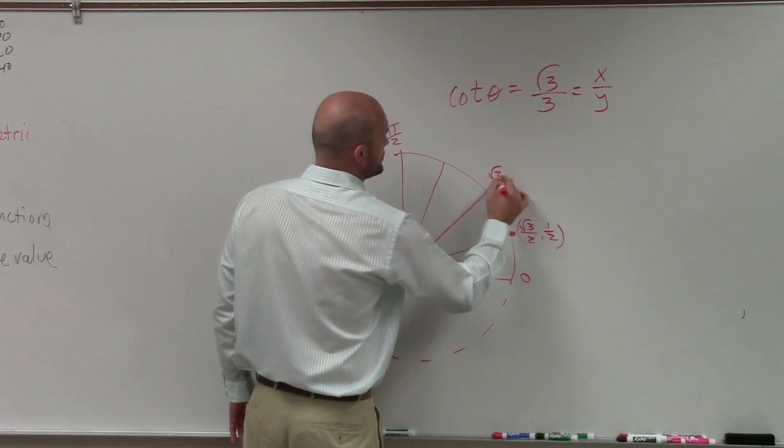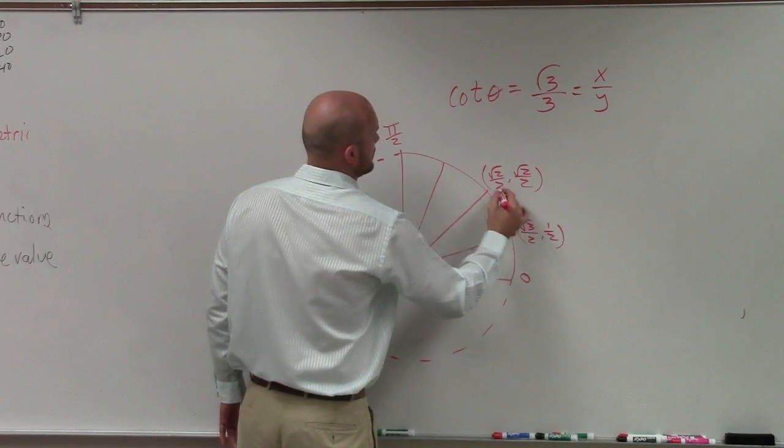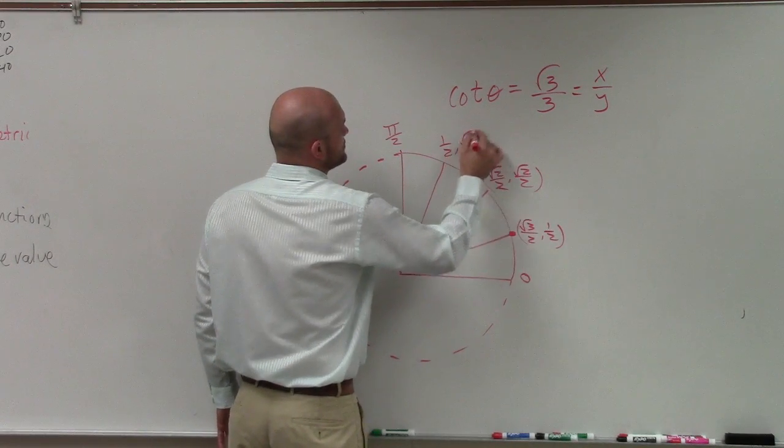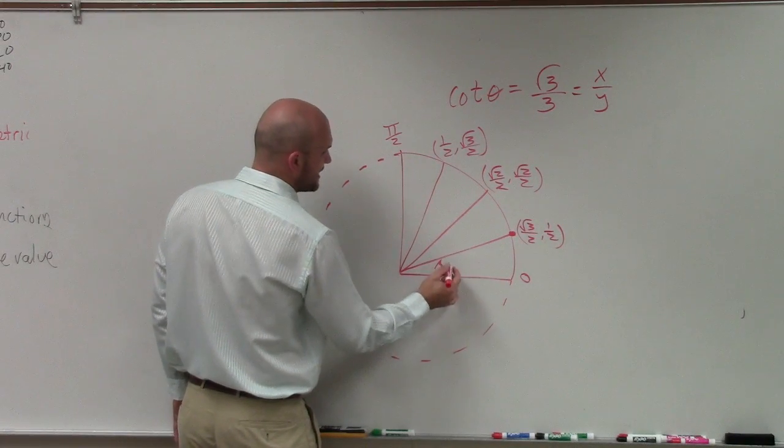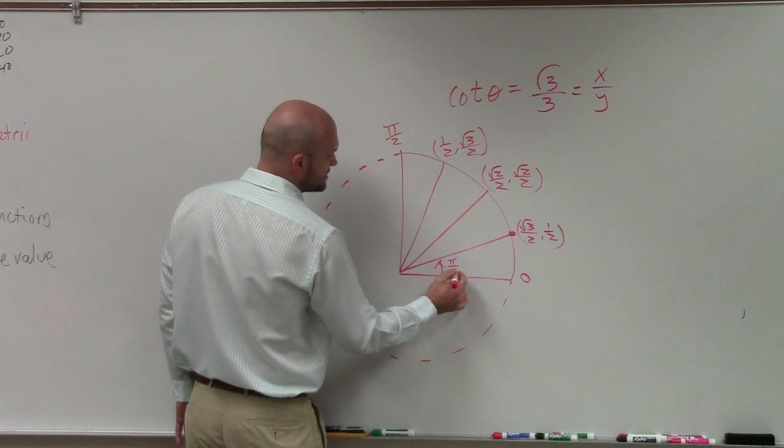Then we have square root of 2 over 2, comma, square root of 2 over 2. And then we have 1 half, comma, square root of 3 over 2. So this point, I'll do it in radians, which is pi over 6.